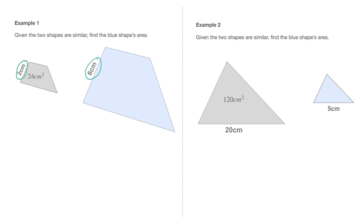First, we need to establish what the scale factor is to get from this 2cm side length to this 6cm side length. The scale factor is the number by which we have to multiply 2 to get 6, and it doesn't take long to realize that it's 3. So k equals 3, where k is the letter often used to refer to the scale factor for length.